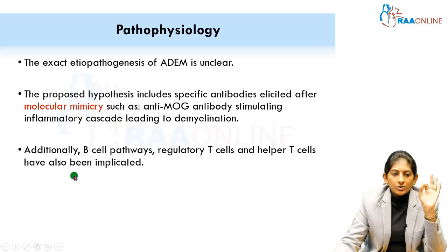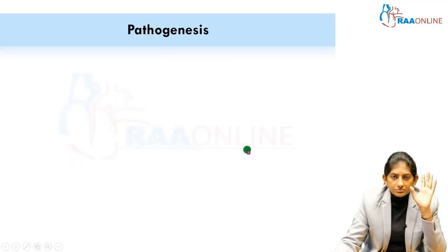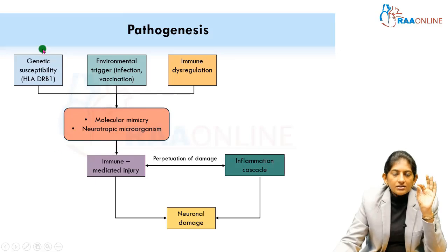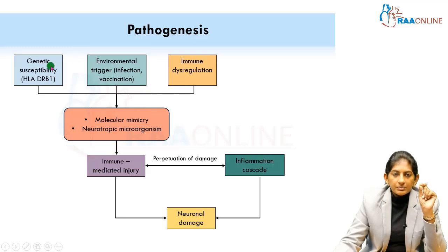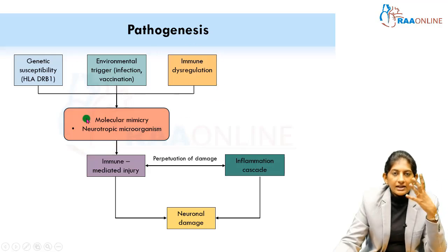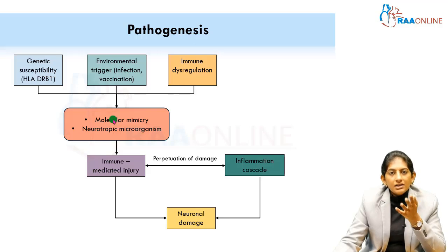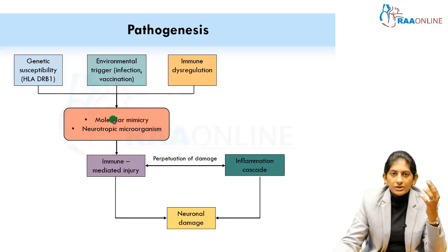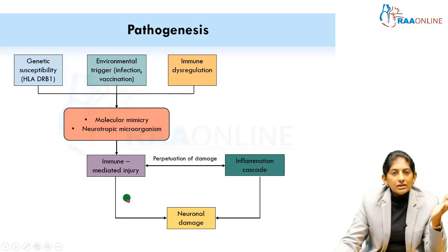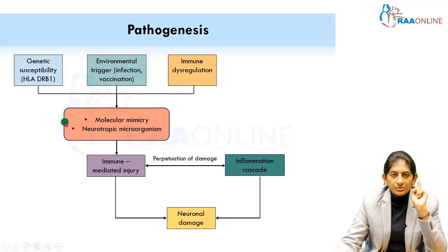Coming to the pathophysiology, in one word it is molecular mimicry. There is a genetic susceptibility for ADEM, and whenever there is an environmental trigger for such children — maybe a vaccination, maybe an infection — immune dysregulation happens. The antibodies produced inside the child's system react with the myelin sheath particles. There are many glycoproteins and many components of the myelin sheath with which this cross-reaction happens.